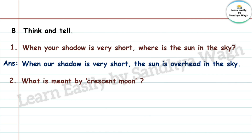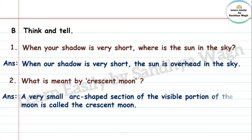Question 2: What is meant by crescent moon? Answer: A very small arc-shaped section of the visible portion of the moon is called the crescent moon.